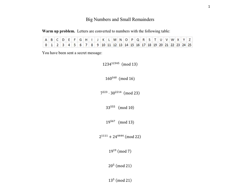A few of the examples below can be solved without any sophistication. For example, the second one: we have 160 to the power of 160, and we're trying to reduce this in mod 16. But 160 is the same as zero in mod 16 — 16 times 10 gives us 160. So in this example, we're just multiplying zero by itself a whole bunch of times, which is just zero. So the remainder there is zero.